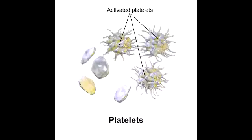Platelets, also known as a thrombocyte. What are platelets? Platelets are small cytoplasmic fragments that are derived from megakaryocytes — basically fragments that come off of megakaryocytes.